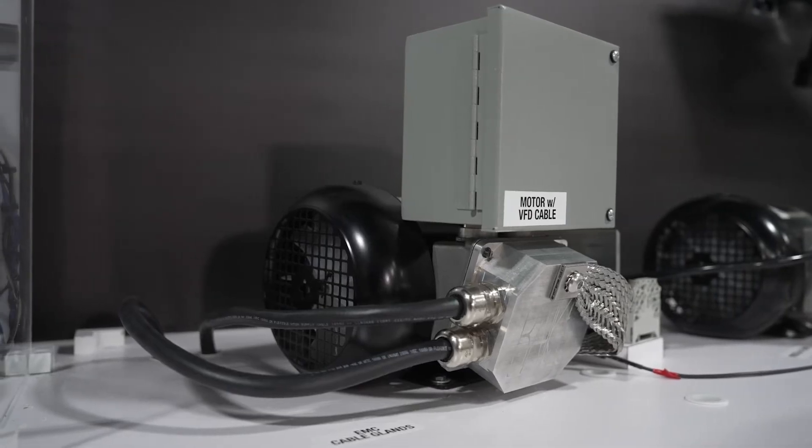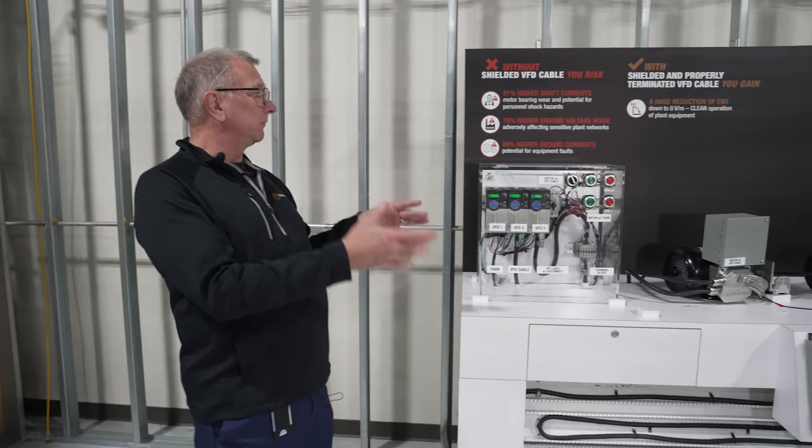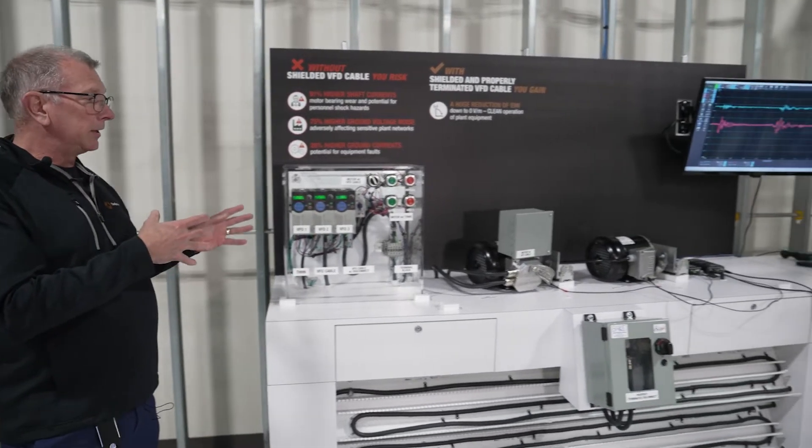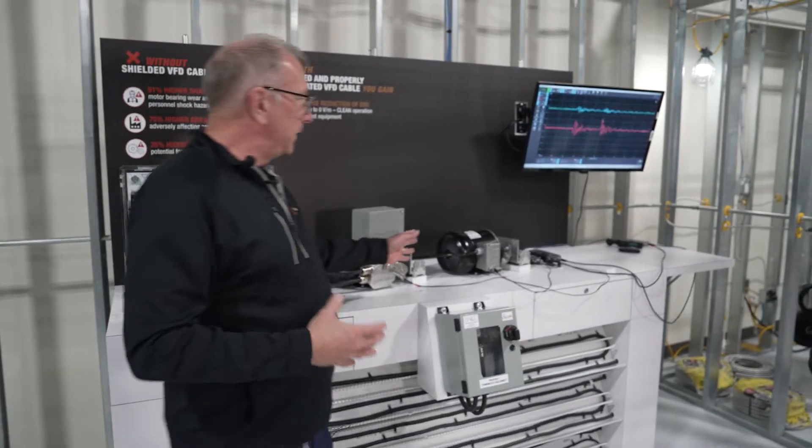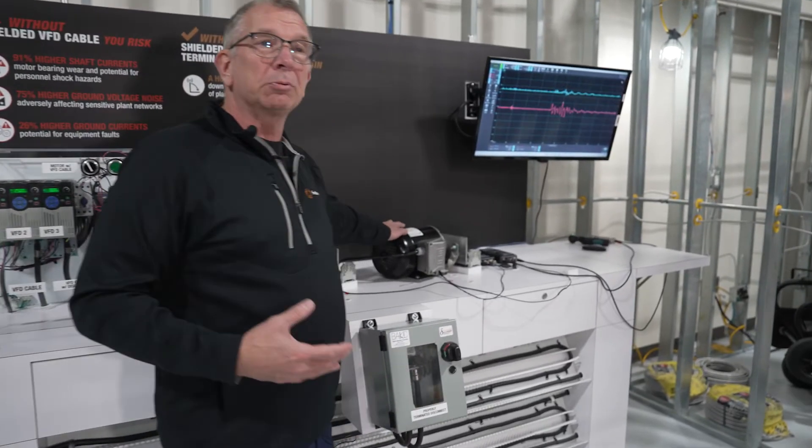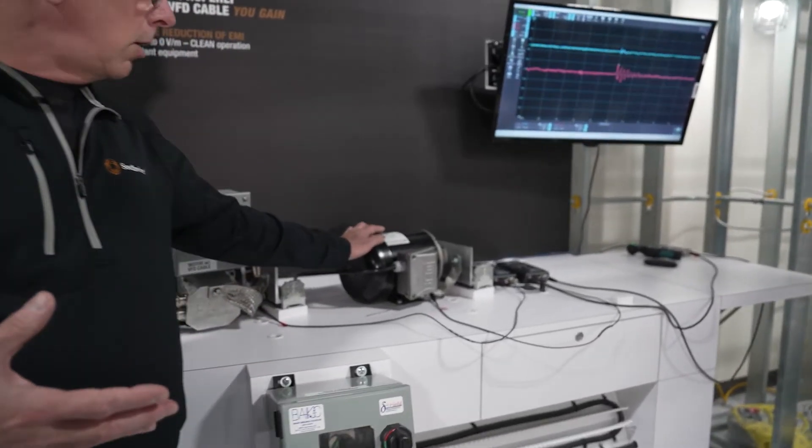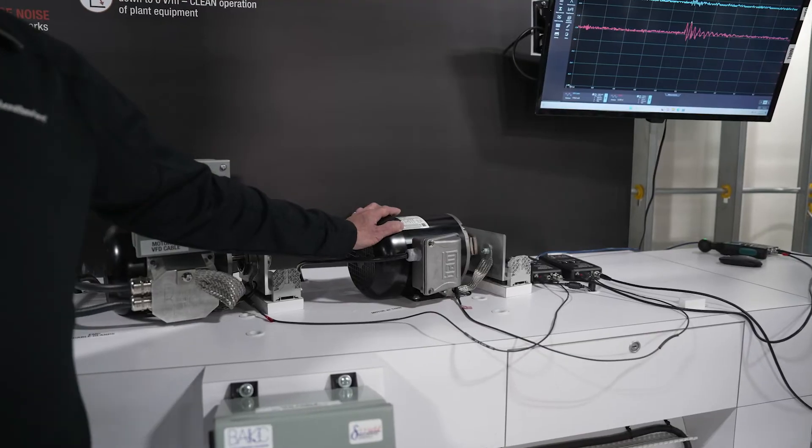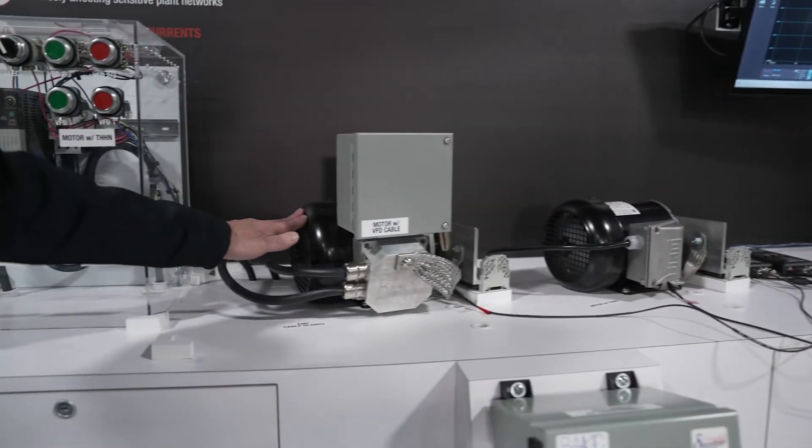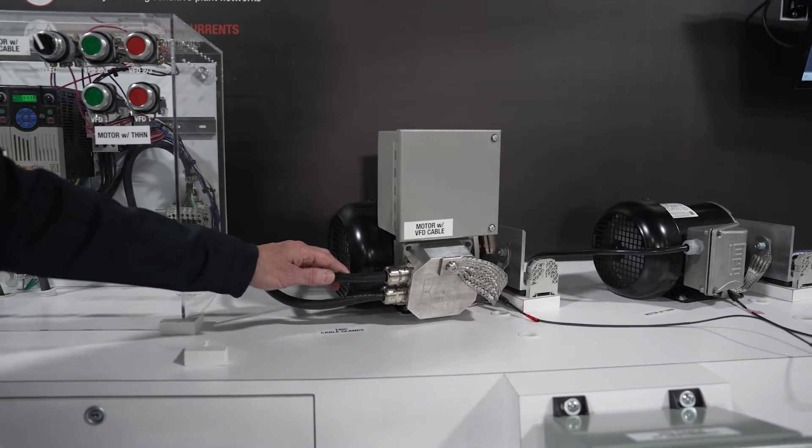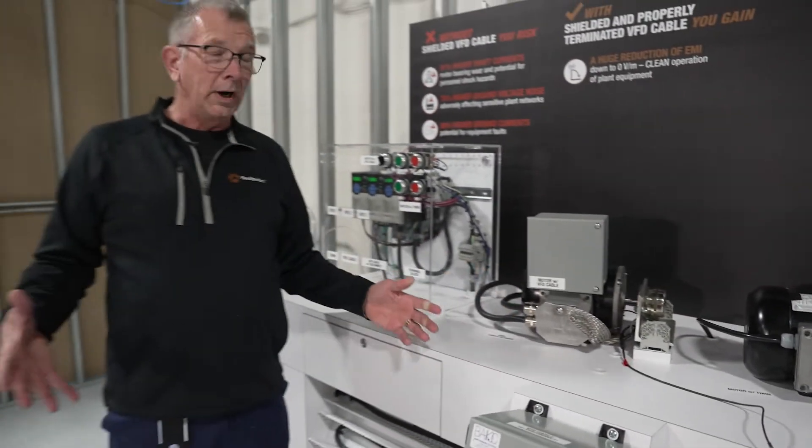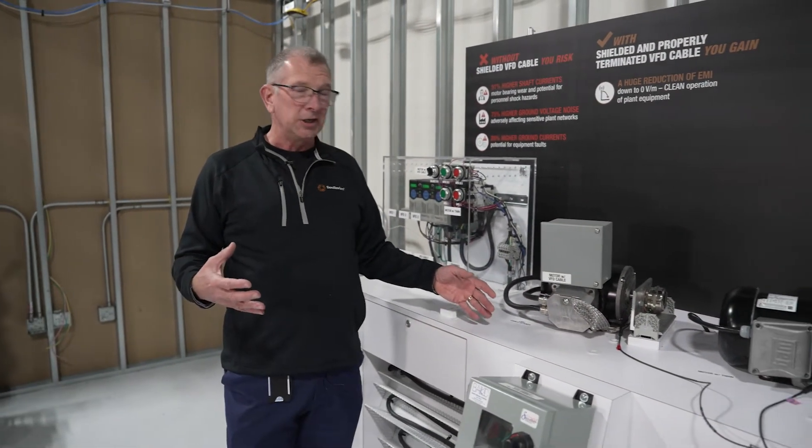What we're showing is two motors running from two different drives. On this motor over here, we're running standard building wire between the drive and the motor. On this motor here, we're running properly terminated variable frequency drive cable. What difference does that make in your installation?